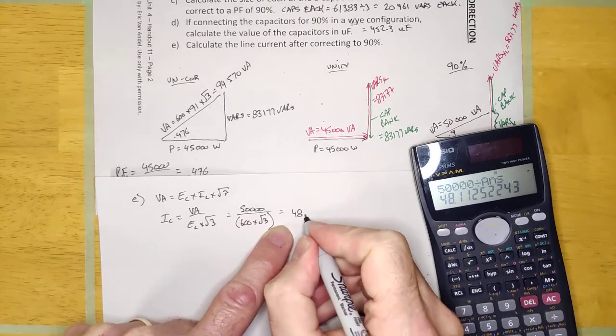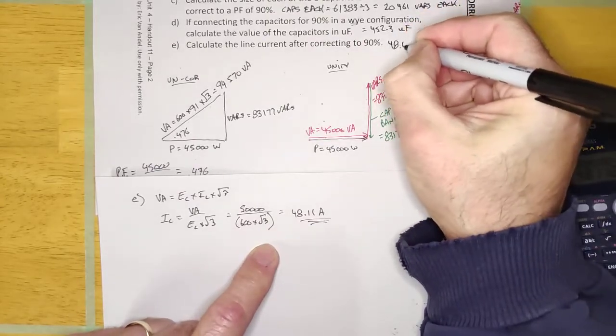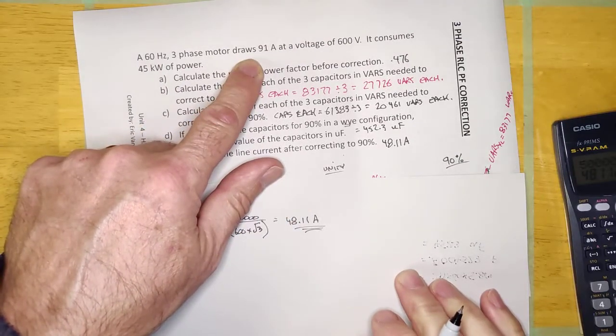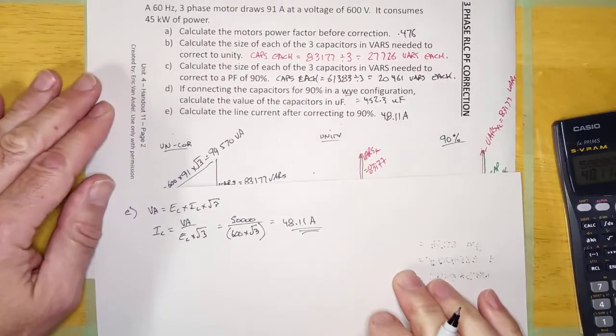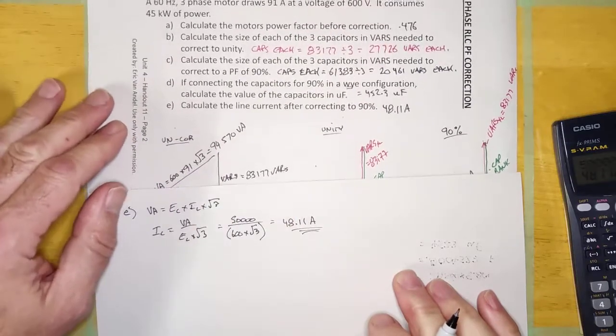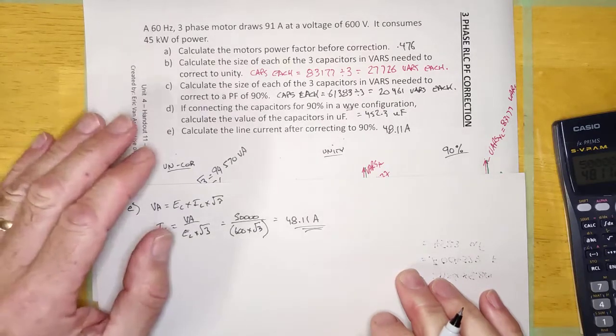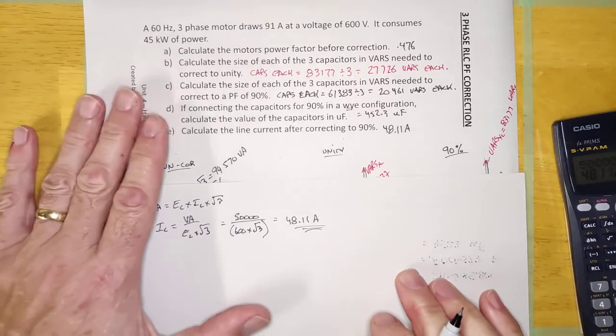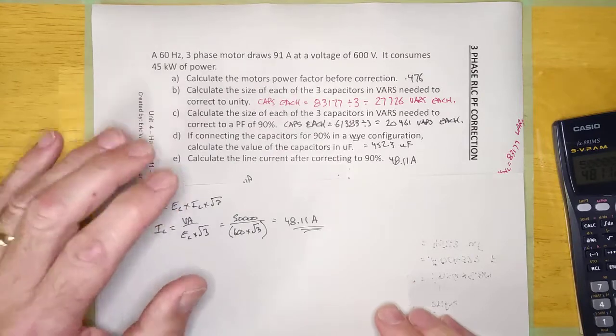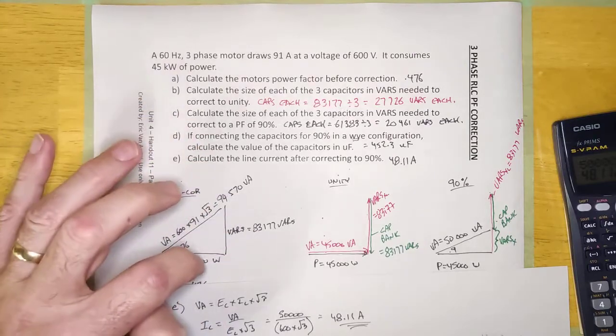After correction, 48.11 amps. Now, this thing was drawing 91 amps before correction. We've corrected it. It's drawing 48.11 amps now when I've corrected it to 90%. If I calculated it at Unity, it'd be even lower. But the thing to remember is to do it the same way you do it in single phase. You're going to draw an uncorrected power phasor diagram, remembering that it's three-phase. Finish the drawing completely up, and then draw a corrected phasor diagram.